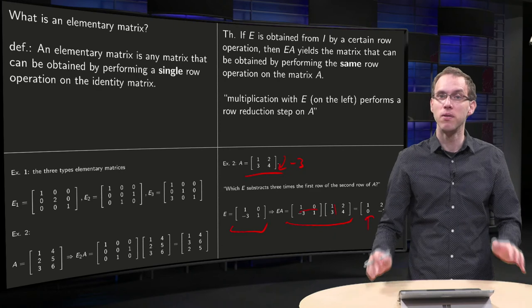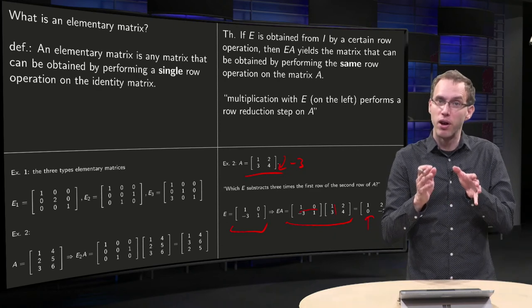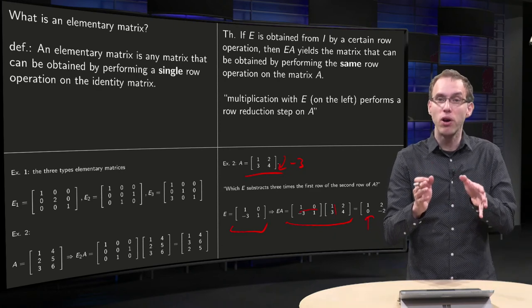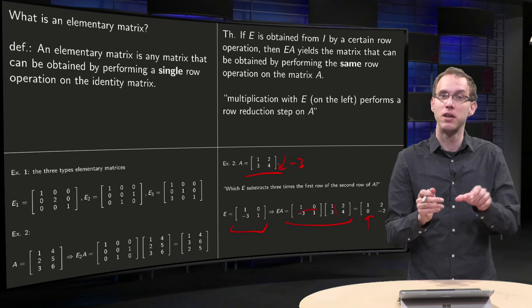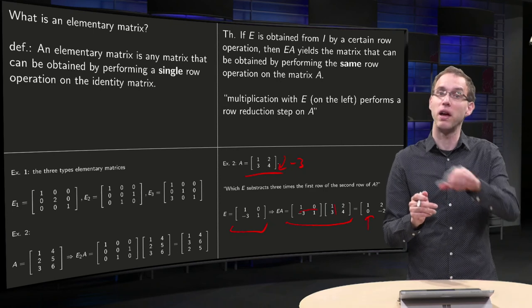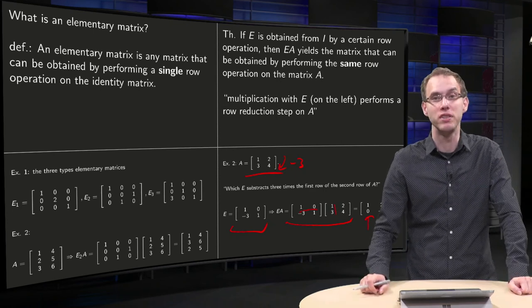So you see, you can do row reduction steps on a matrix by multiplying on the left with the appropriate elementary matrix.